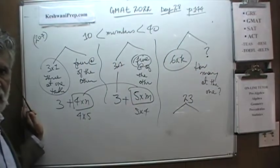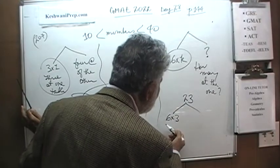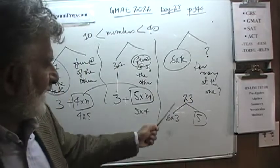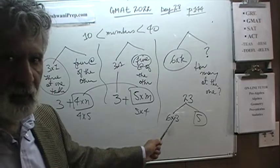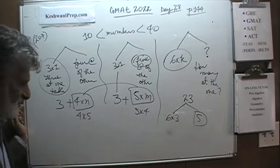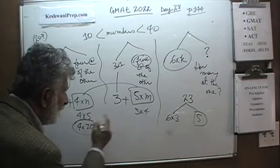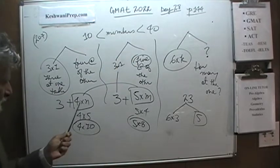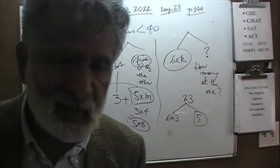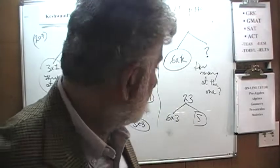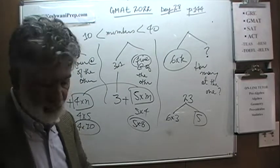Since 23 people are in the club and 6 sit at each table except the last, that's 6×3 = 18 people at the full tables, with 5 remaining at the last table. We verify that the next possible solution — 4×10=40 and 5×8=40, giving 43 people — exceeds the cap of fewer than 40 members, so it doesn't work. This is the only valid scenario, leaving 5 people at the last table.